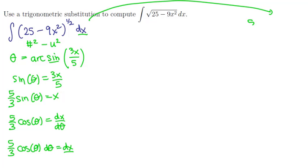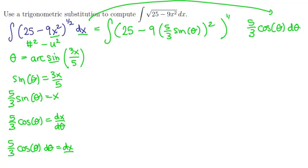So we'll replace the differential with 5 thirds cosine of theta d theta and then let's take care of the rest of the substitution. We're going to have this x squared right here is what we need to replace. So we have 25 minus 9 times 5 thirds the sine of theta quantity squared raised to the 1 half power.